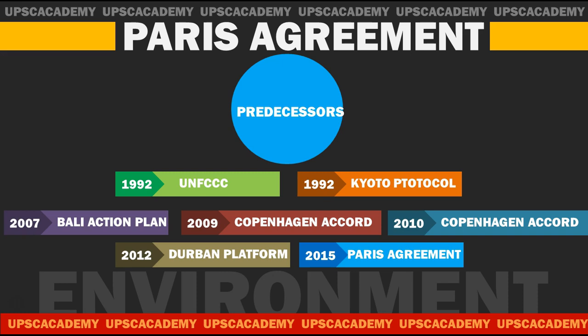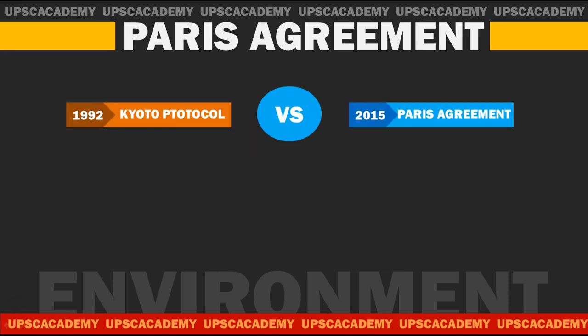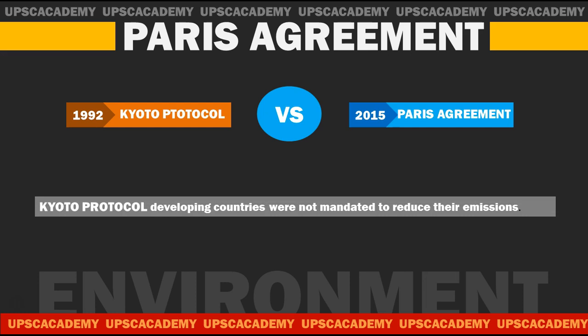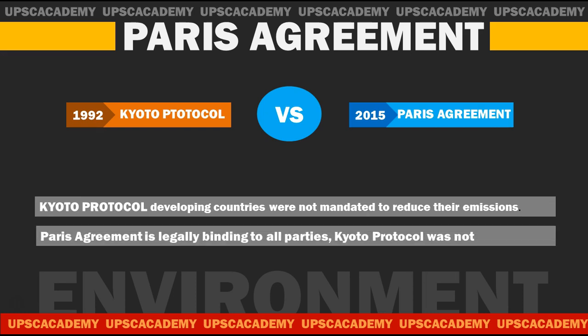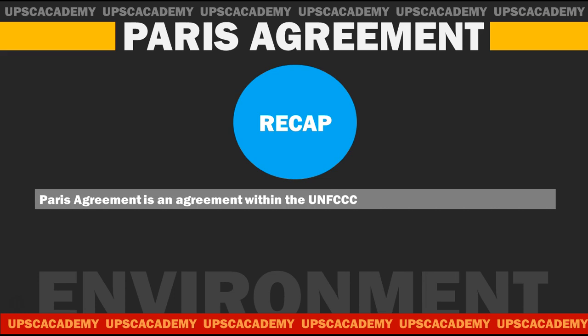In 2012 there was the Durban Platform for Enhanced Action. The most recent and comprehensive climate agreement is the Paris Agreement. In the history of agreements for climate change, the Paris Agreement holds a key position as the world's first comprehensive climate agreement. Although developed countries were parties to the Kyoto Protocol, developing countries were not mandated to reduce their emissions. The Paris Agreement is legally binding to all parties, whereas the Kyoto Protocol was not.